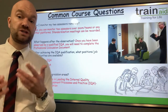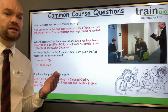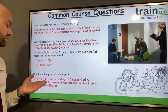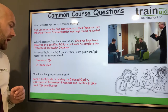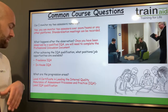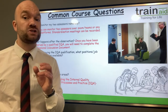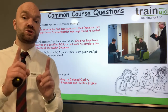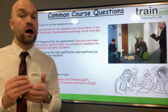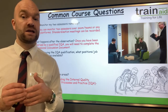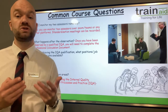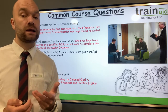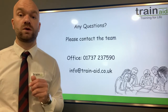What are the progression areas after the IQA qualification? The next step is a Level 4 Certificate in Leading the Internal Quality Assurance of Assessment Processes and Practices — the Lead IQA qualification. It is a bolt-on unit to the award, and this is where you'll be monitoring two IQAs, ensuring that standardisation is being maintained with those two qualified IQAs.